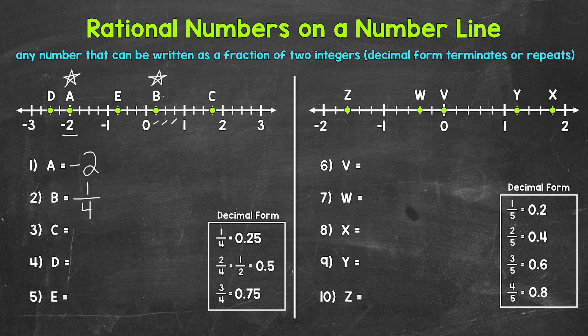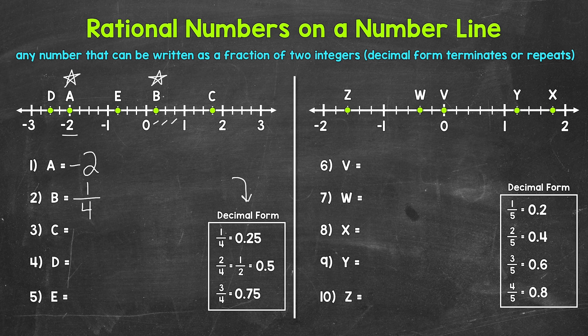Fractions can be written as decimals and decimals can be written as fractions, so it's good to be familiar with both. Fourths are common, so knowing both forms is helpful. One fourth equals 0.25 (twenty-five hundredths), two fourths (one half) equals 0.5 (five tenths), and three fourths equals 0.75 (seventy-five hundredths). So point B at one fourth can also be written as 0.25.